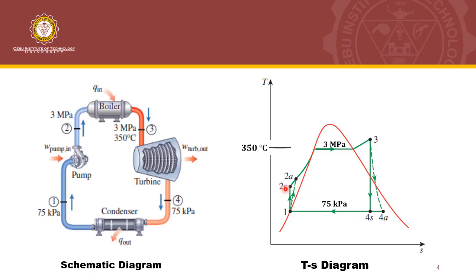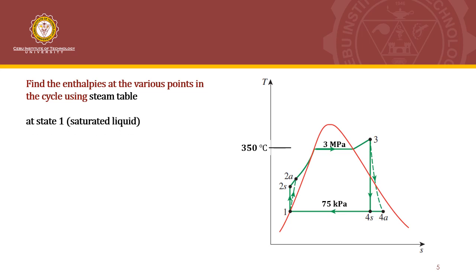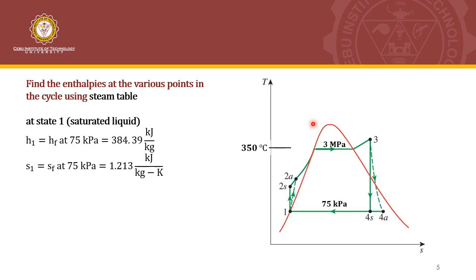The S here denotes isentropic processes while A denotes the actual point or actual process. We will begin our analysis by finding the enthalpies at the various points in the cycle using the steam table. At state 1, this is a saturated liquid. We can use the results previously found for the enthalpy at 75 kPa, which is 384.39 kJ per kg. We also find the entropy and specific volume at state 1.